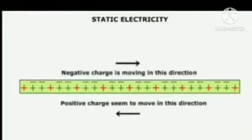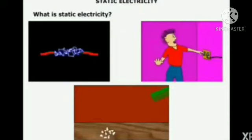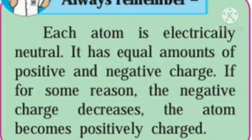If the negative charge in an atom decreases, the atom becomes positively charged. This means that of the two objects being rubbed, one becomes positively charged and the other becomes negatively charged. Static electricity can cause a spark, a shock, or it can attract small particles of paper. Always remember: each atom is electrically neutral, having equal amounts of positive and negative charge. If the negative charge decreases, the atom becomes positively charged.